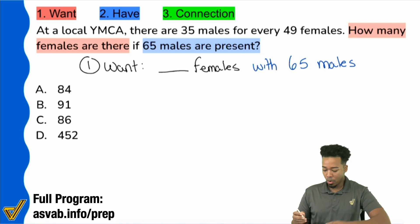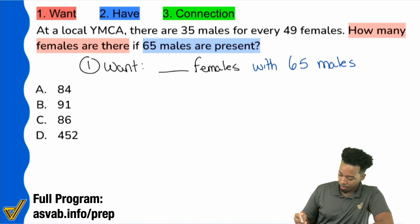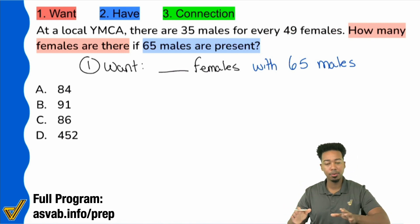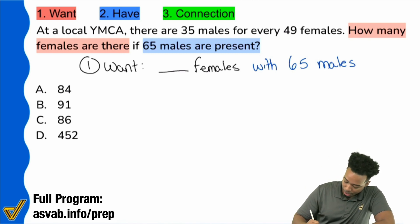So what we want is the number of females. We want blank females, and the 65 males - that's extra information that you're going to highlight. You're going to understand that you have to write that down and it's connected to the number of females because they clearly say, how many females, if this is the condition, if this many males.